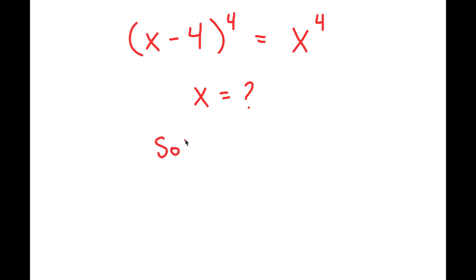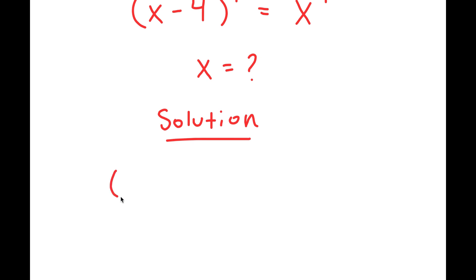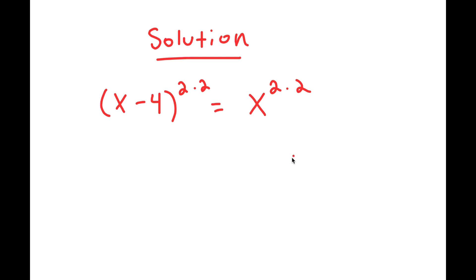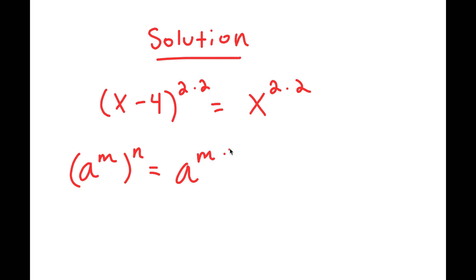For my solution, I'm first going to rewrite this equation as x minus 4 to the power of 2 times 2 is equal to x to the power of 2 times 2. The reason I did this is because now I can use the property a to the power of m to the power of n is equal to a to the power of m times n.